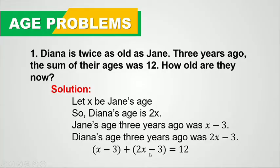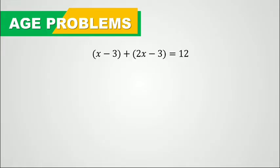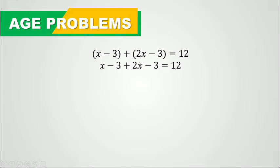From here, we solve for x. So x minus 3 plus 2x minus 3 equals 12. We eliminate the parentheses — nothing changes since there is no sign change — giving us x minus 3 plus 2x minus 3 equals 12. Combining like terms: x plus 2x is 3x, and negative 3 minus 3 is negative 6, so 3x minus 6 equals 12.